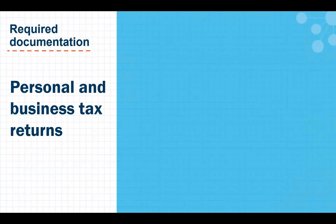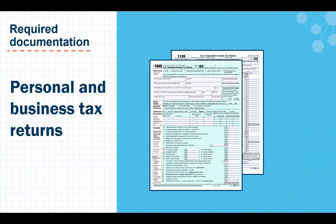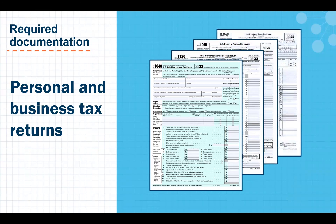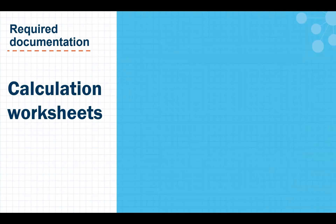Additionally, we will verify the self-employed borrower's employment and income by requesting copies of their signed federal income tax returns — both individual and business — that were filed with the IRS, along with all applicable schedules. Lastly, we will want to document how we went about calculating our income by the use of an income calculation worksheet.